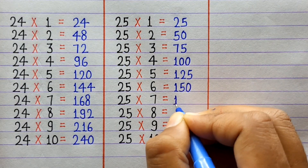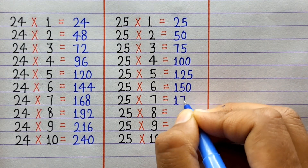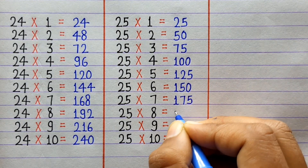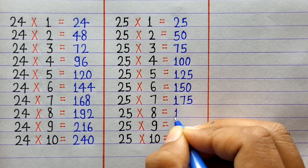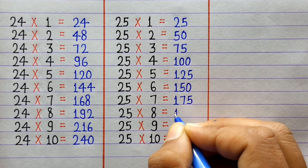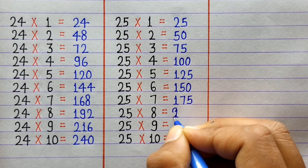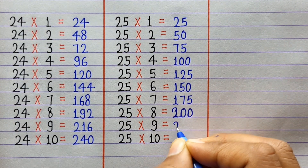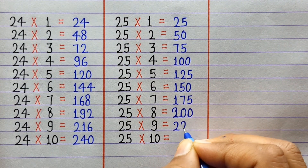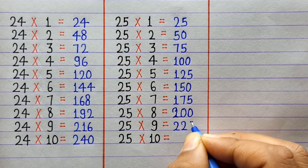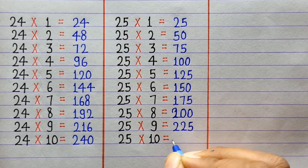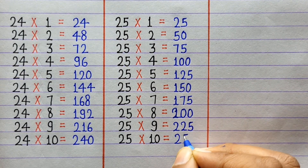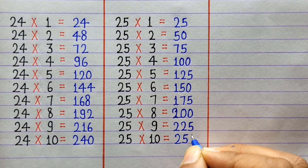25×7=175, 25×8=200, 25×9=225, 25×10=250.